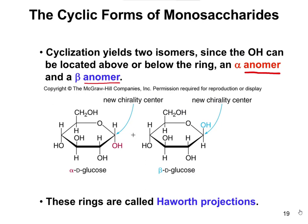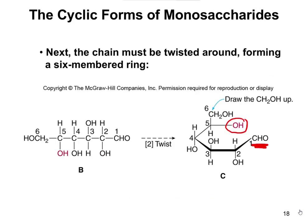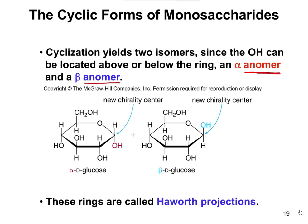Anomers specifically refer to the location of the OH on this new chiral carbon that you form. Going back to the previous slide, that CHO — which is C double bonded to O bonded to an H — when we draw the new product, we lose that C double bond to O. Because of that, we make a new chiral center: that carbon now bonds to four different things — an H, an OH, an O, and a carbon. Alpha means the OH is down, and beta means the OH is up.